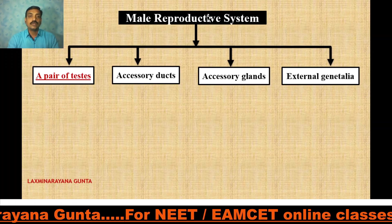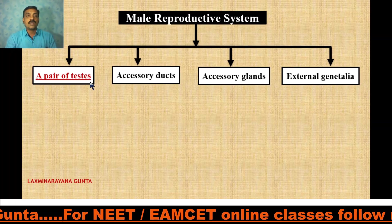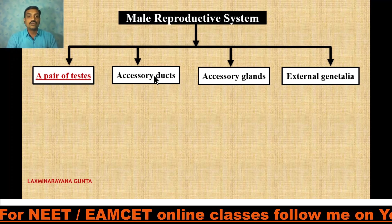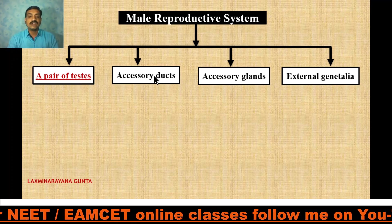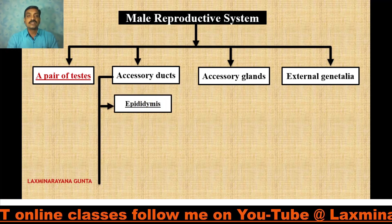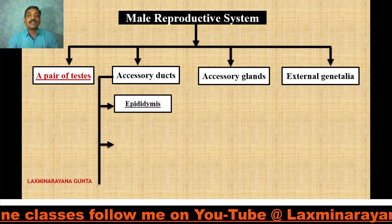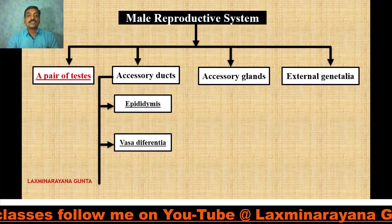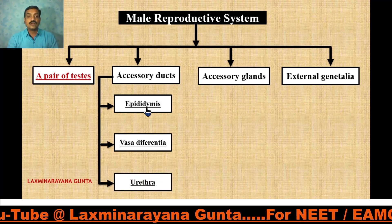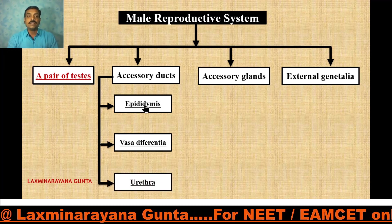Coming back to the accessory ducts — we have completed the testes. Now let us move to accessory ducts. There are majorly three accessory ducts: the epididymis, the vasa efferentia, and the urethra.